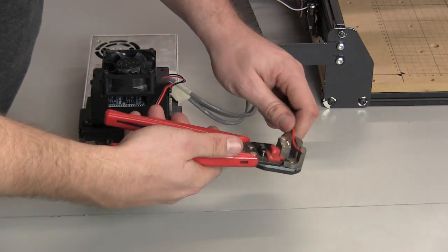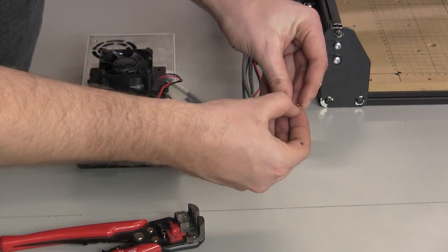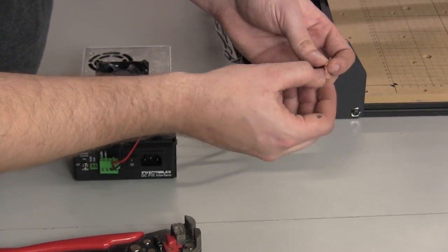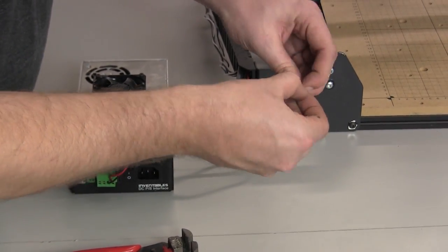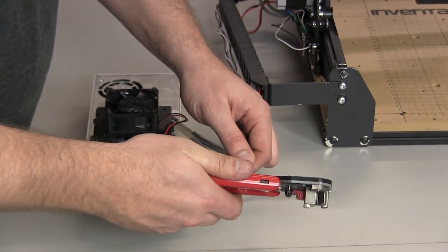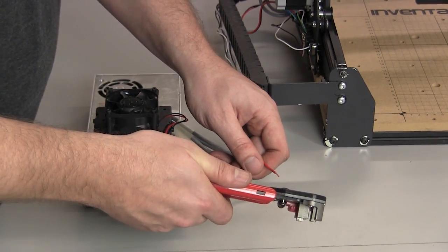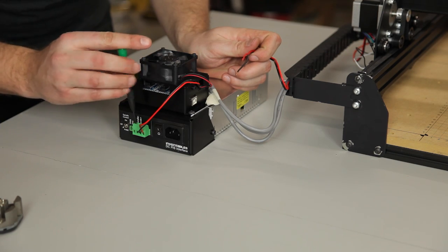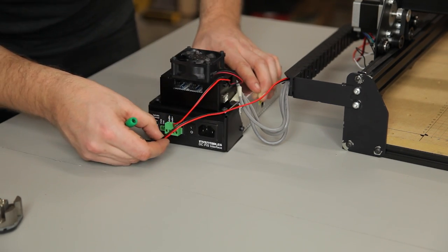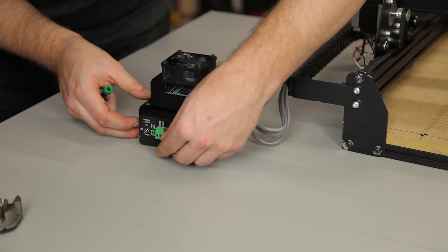Now we'll take the zip wire from the spindle, strip it as before, and wire it into the remaining two spots on the power terminal block. You'll notice that the power supply interface is marked Spindle Plus and Spindle Minus. The black wire goes to Spindle Minus, and the red wire goes to Spindle Plus.